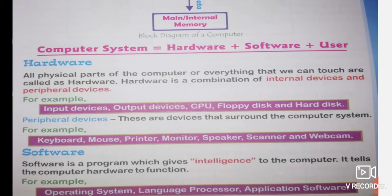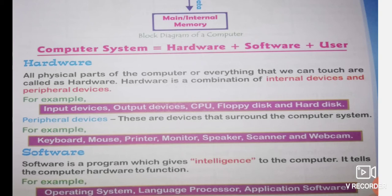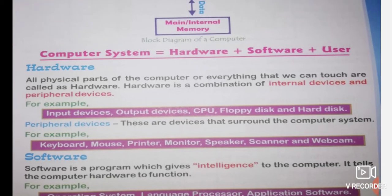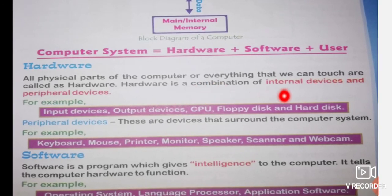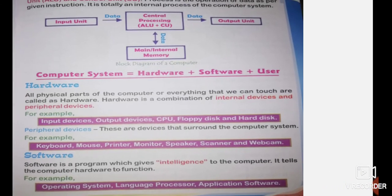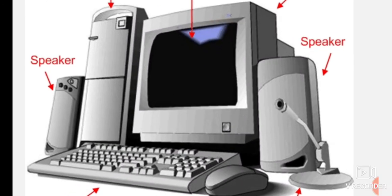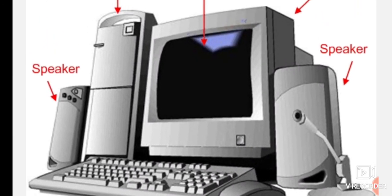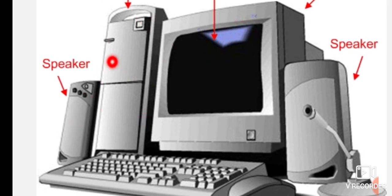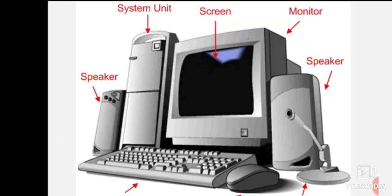The next topic is hardware, software, and user. All the physical parts of a computer — everything that we can touch — are called hardware. Hardware is a combination of internal devices and peripheral devices. A computer is made up of a lot of devices. Whatever devices we can see and touch come under the concept of hardware.